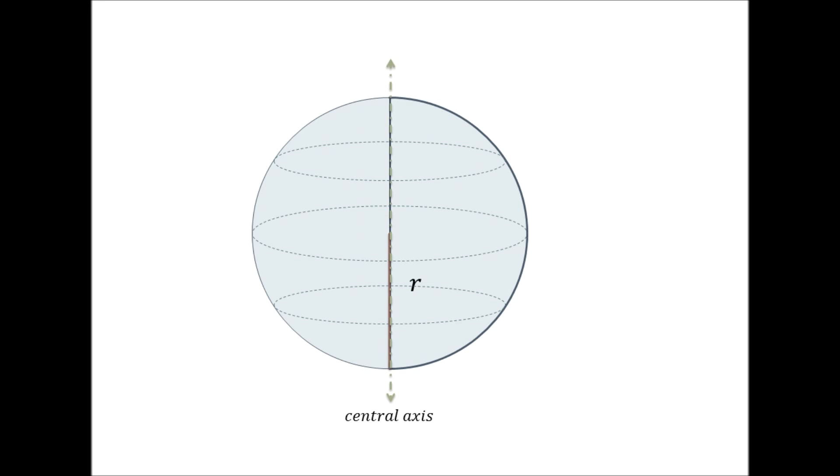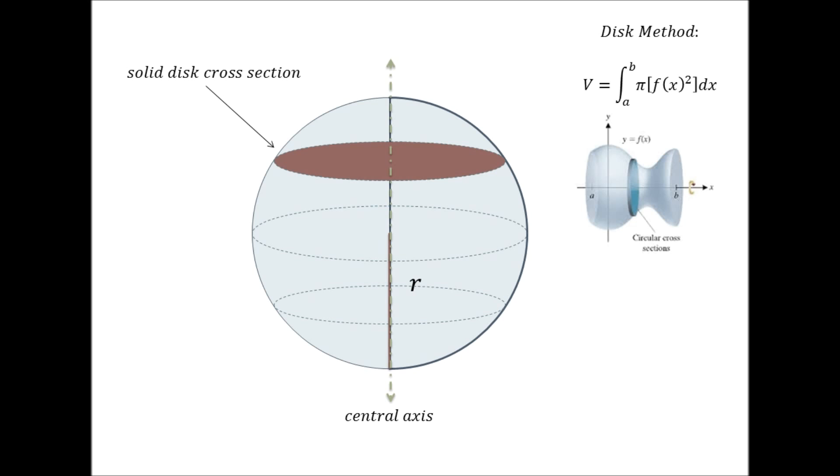And by analyzing the sphere in this way, we see that it falls under the profile of a solid of revolution, or any solid created by revolving a 2D shape about any axis. And further, seeing that any cross-section perpendicular to the central axis is a solid disk, we can use the disk method to find its volume.